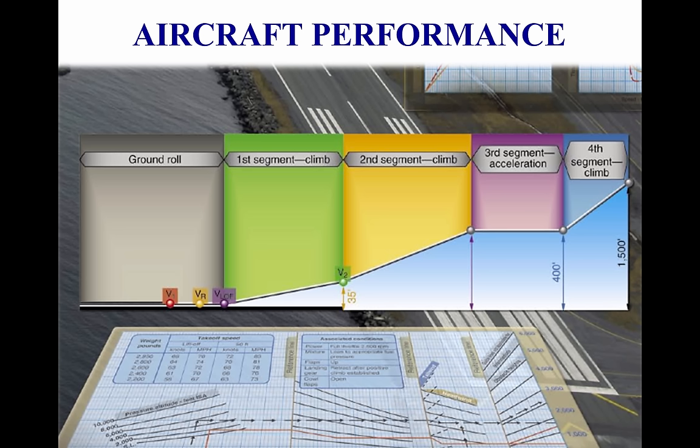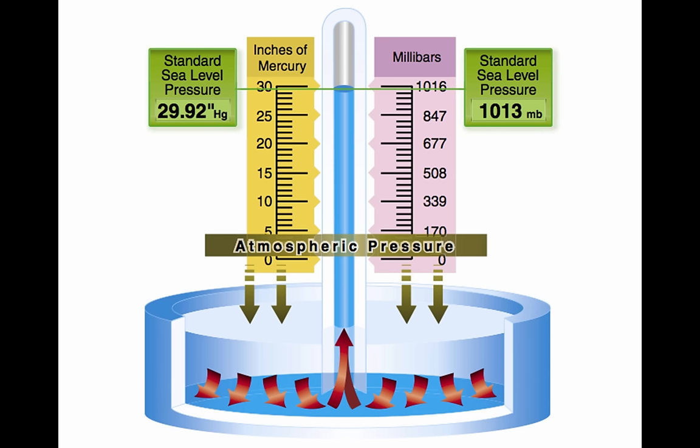Since the characteristics of the atmosphere have a major effect on performance, it is necessary to review two dominant factors: pressure and temperature. The atmosphere is an envelope of air that surrounds the Earth and rests upon its surface. It has mass, weight, and indefinite shape. Air, like any other fluid, is able to flow and change its shape when subjected to even minute pressures because of a lack of strong molecular cohesion.